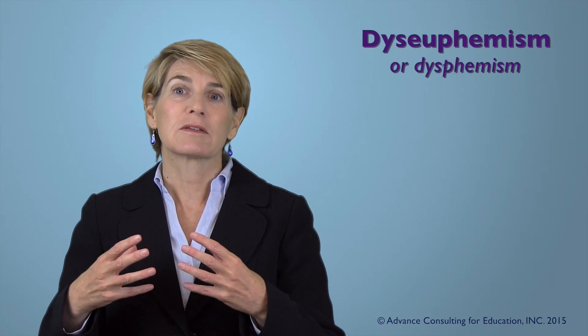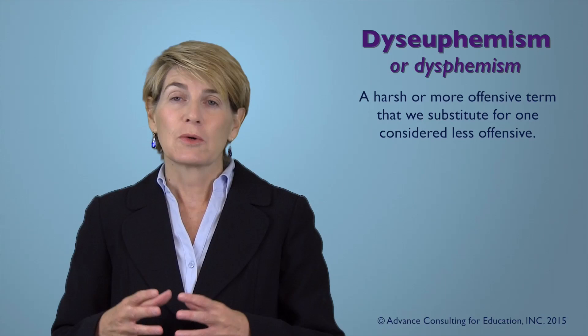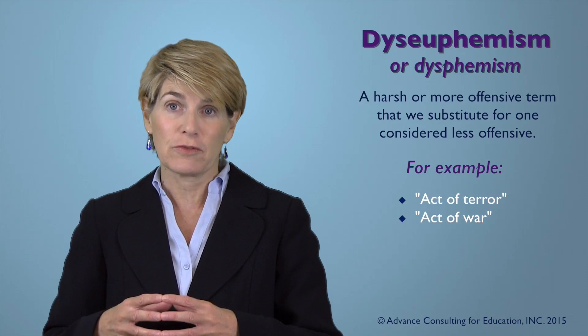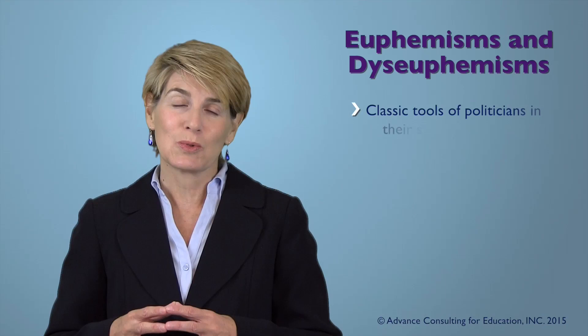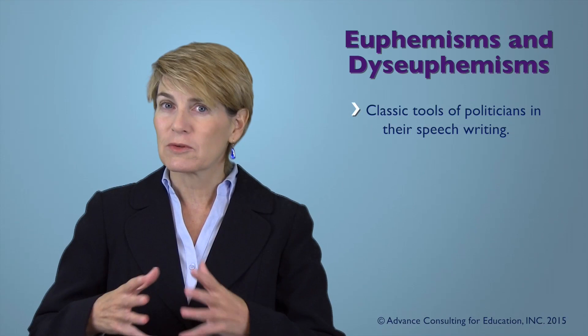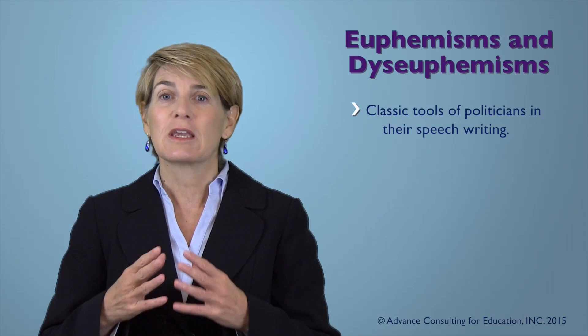A dis-euphemism is the opposite of a euphemism. Instead of cushioning things and making them seem softer, we're going for the opposite effect — we want something to sound harsher and more distressing. Examples include calling something 'an act of terror' or 'an act of war' to get a really strong reaction from people. Euphemisms and dis-euphemisms are classic tools of politicians in their speechwriting — listen to any politician and you'll hear them use both.